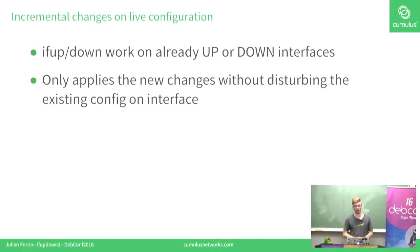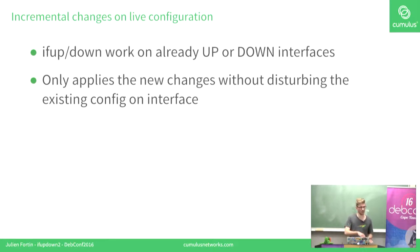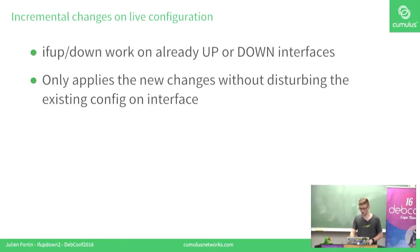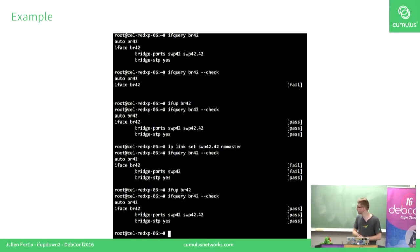We query the running state of the interface and only apply the difference between the user configuration and the running configuration. So if you have a bridge with two ports and want to add a new port, you can just run ifup on your bridge and it will add it automatically.